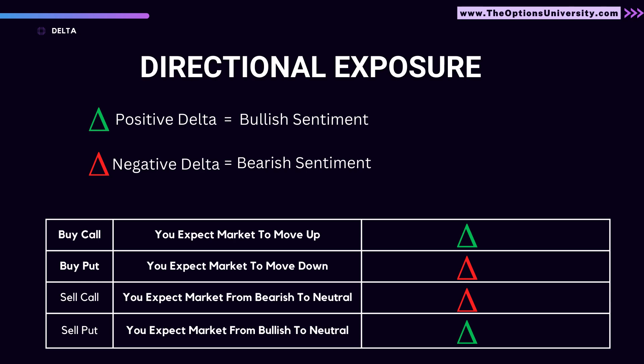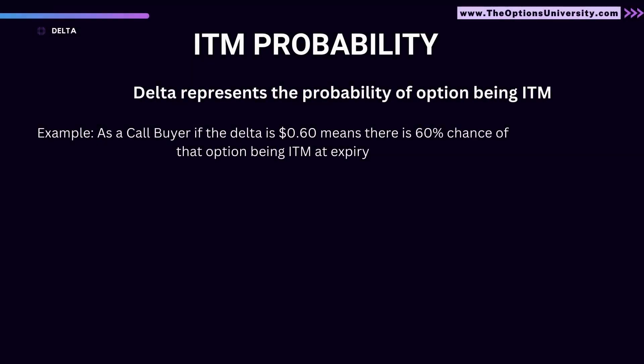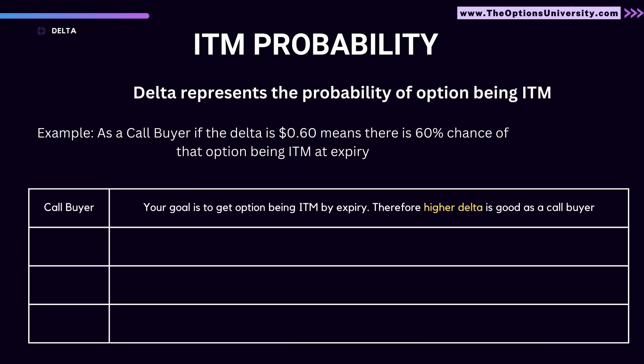Moving on to probability — delta represents the probability of an option being in the money or expiring worthless. For example, if you are a call buyer with a 0.60 delta, you have a 60% chance of that option being in the money at expiry. As a call buyer, your goal is for the option to be in the money by expiry, so a higher delta is good — it means a higher chance of the contract being in the money.